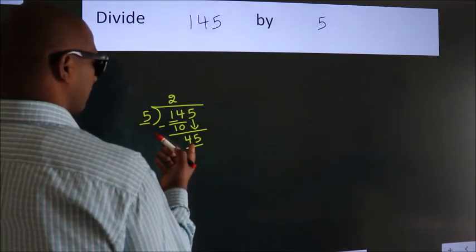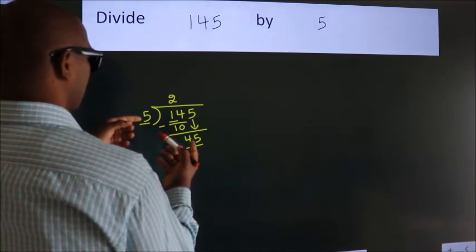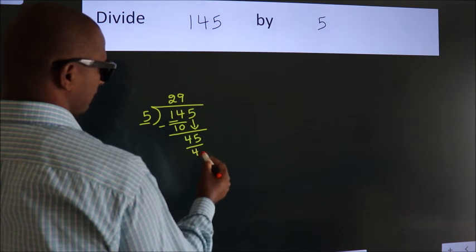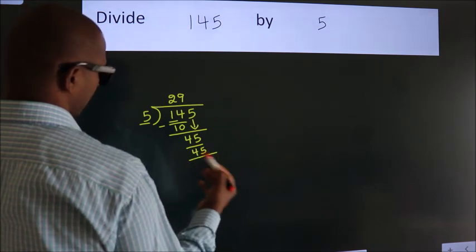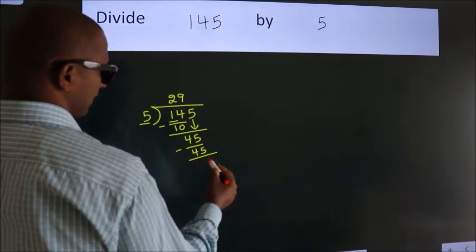When do we get 45 in the 5 table? 5 nines, 45. Now we subtract. We get 0.